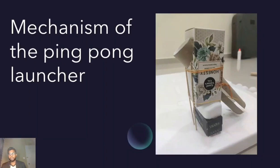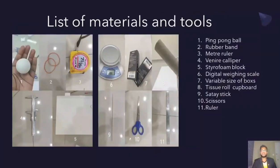Good day everyone, I am Tinesh and now I shall present to you about the mechanisms of the ping pong ball launcher. So here are the list of materials and tools used to build this ping pong ball launcher. And they are ping pong ball, rubber bands, meter ruler, vernier caliper, styrofoam blocks, digital weighing scale, variable size of boxes, tissue roll cardboard, satay stick, scissors and ruler.